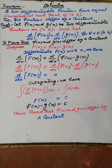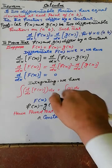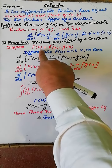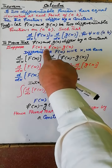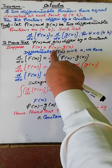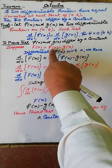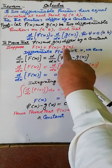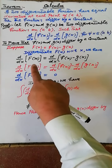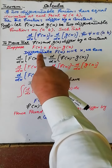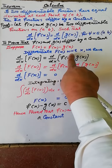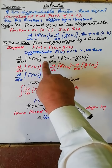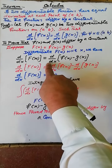Suppose F(x) is a function obtained from the difference of f(x) and g(x). We differentiate F(x) with respect to x: d/dx of F(x) is equal to d/dx of f(x) minus g(x).